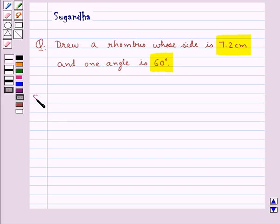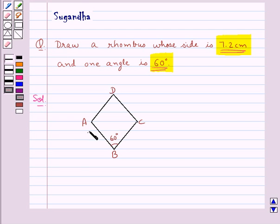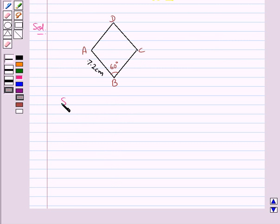Now let's move on to the solution. First we construct a rough sketch of the rhombus with side 7.2 cm and one angle 60 degrees. Consider this rhombus ABCD with one side AB equal to 7.2 cm and one angle as 60 degrees. Now we shall construct this rhombus step by step.